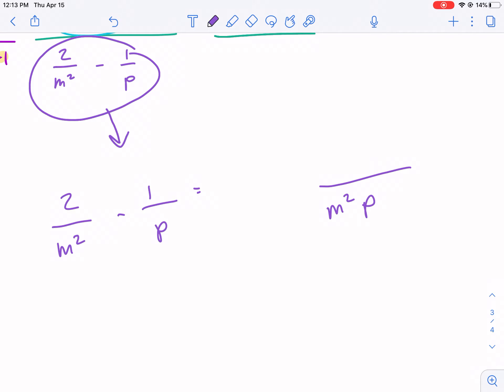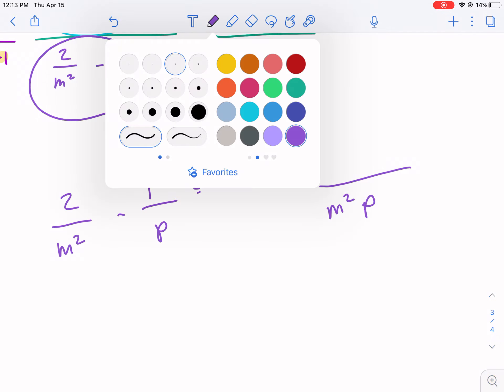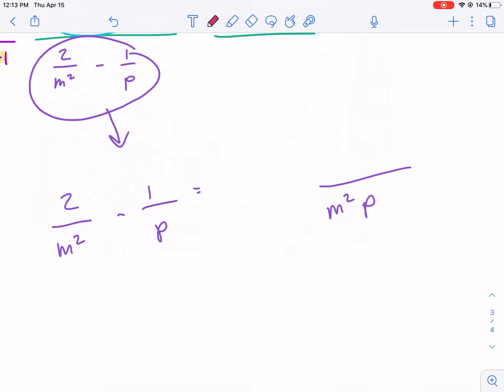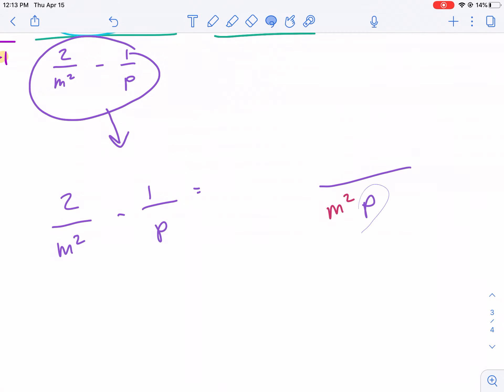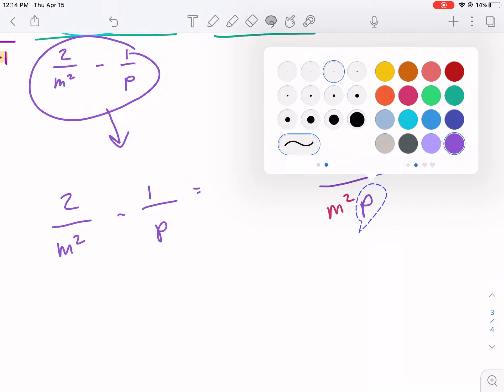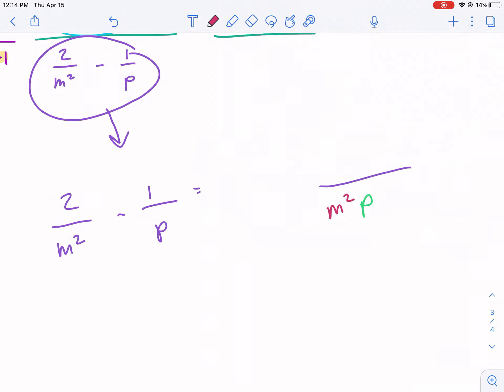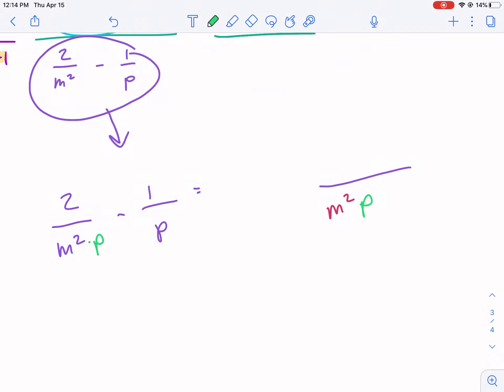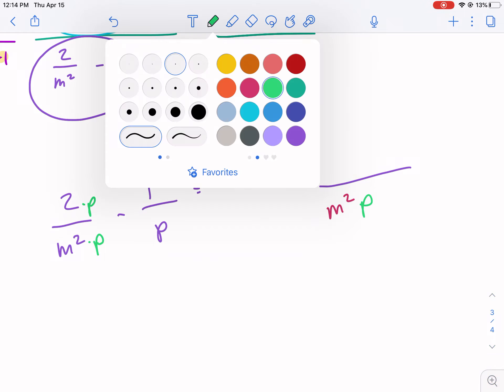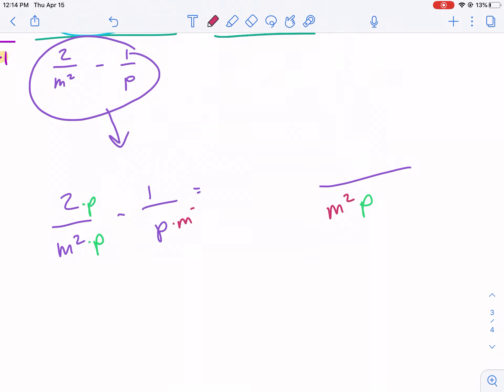The two fractions currently on the left and right don't have that. So I need to make sure this... I recognize that this m squared denominator does not have the p. So I'm going to multiply it by p. And if I multiply it to the bottom, I also have to multiply it to the top. The p is missing the m squared. So I'm going to multiply both the top and bottom by m squared.